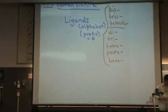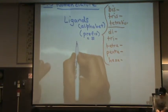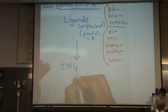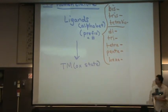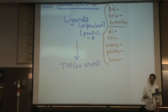Identify all ligands and put them in alphabetical order. Next step: find the transition metal oxidation state. This is just like we've done before, just like we did in the very first class of Chem 2A — you've got to find the oxidation state of the transition metal.